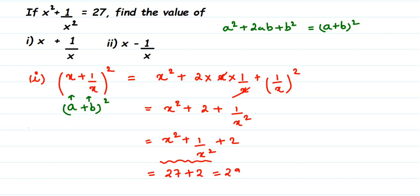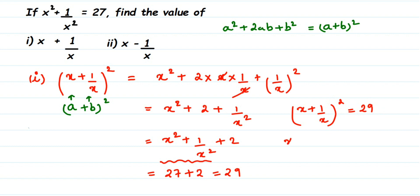So (x + 1/x)² = 29. But we want only the value of x + 1/x, not the square. To remove the square, we take a square root on both sides. The power 2 cancels, and we get x + 1/x = √29. That's the first answer.